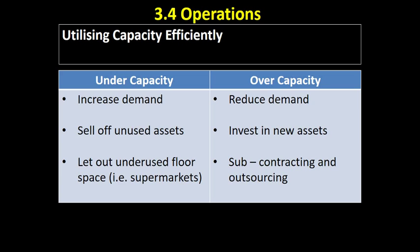So how can we utilise capacity efficiently? If there's under-capacity, we would look to increase demand, perhaps through marketing efforts, so we can use our capacity more efficiently. We might sell off unused assets — if we've got factory buildings that are unused or underused, we might just get rid of them. Supermarkets have been quite creative with this: they've bought a lot of floor space and sometimes let unused areas out to coffee shops and similar businesses, using under-capacity to generate extra revenue.